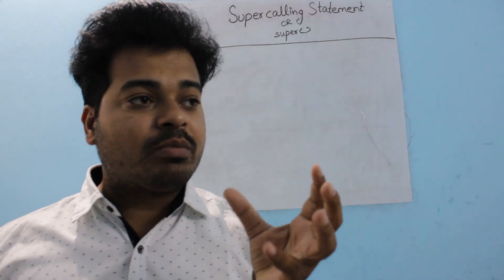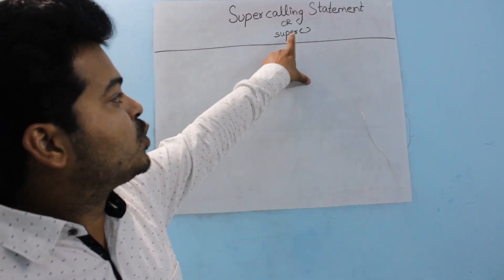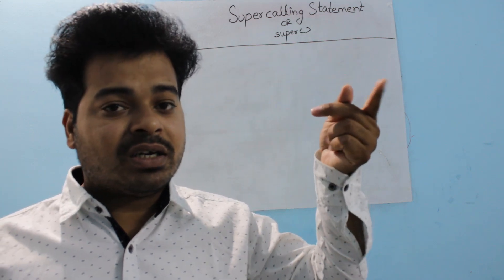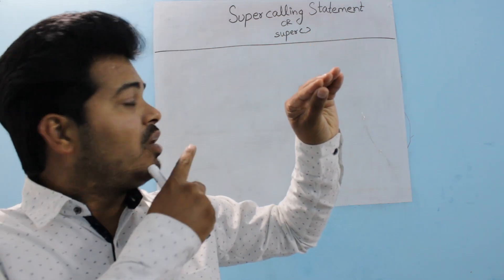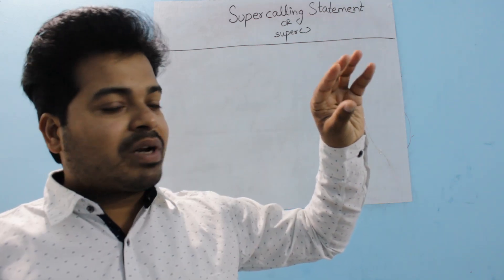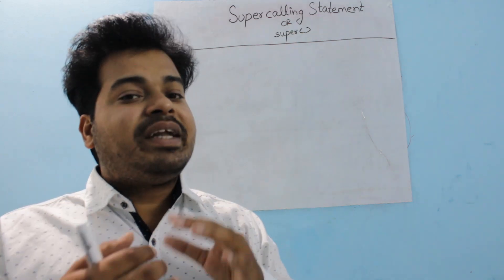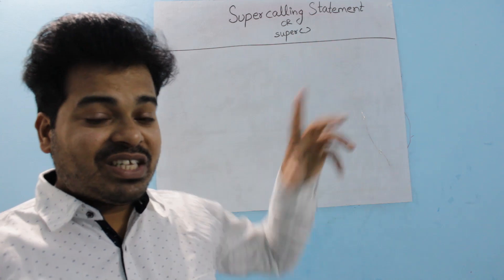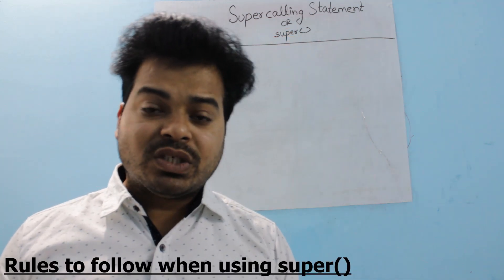The super calling statement in Java is used to call from a subclass constructor to the immediate super class constructor. The word 'immediate' is very important here. If you have two or many classes each having a constructor, the super calling statement calls the constructor of the class that is directly above it in the inheritance hierarchy.